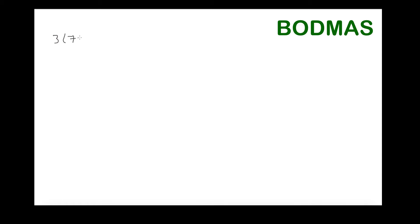Now: 3(7 plus 2). This is interesting — when a number sits directly outside brackets, it means that number is multiplied by the contents of the bracket. So we solve the bracket first: 7 plus 2 is 9. Then we multiply by 3: 3 times 9 equals 27.